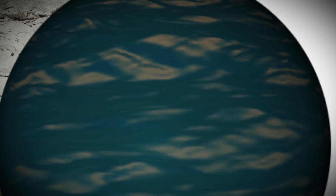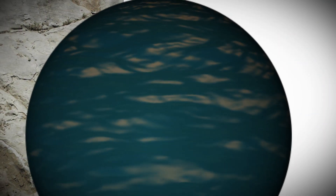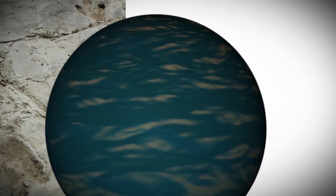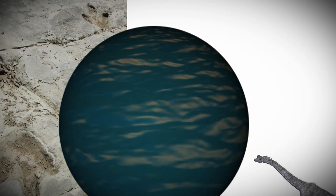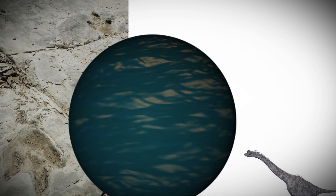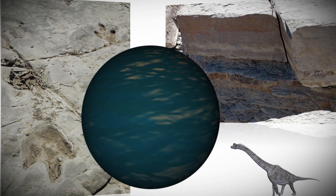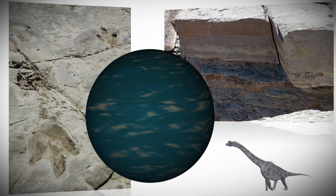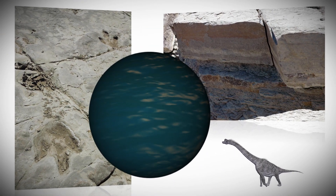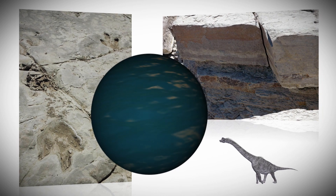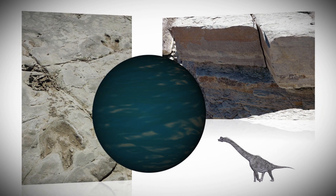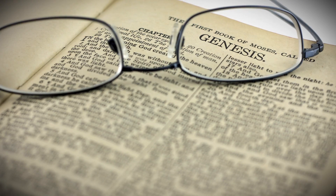A global flood helps explain tracks on repeating sets of sediments, the lack of baby dinosaur tracks, and the very broad extent of layers that hold dinosaur tracks. And we find this awesome event in the very first book of the Bible.